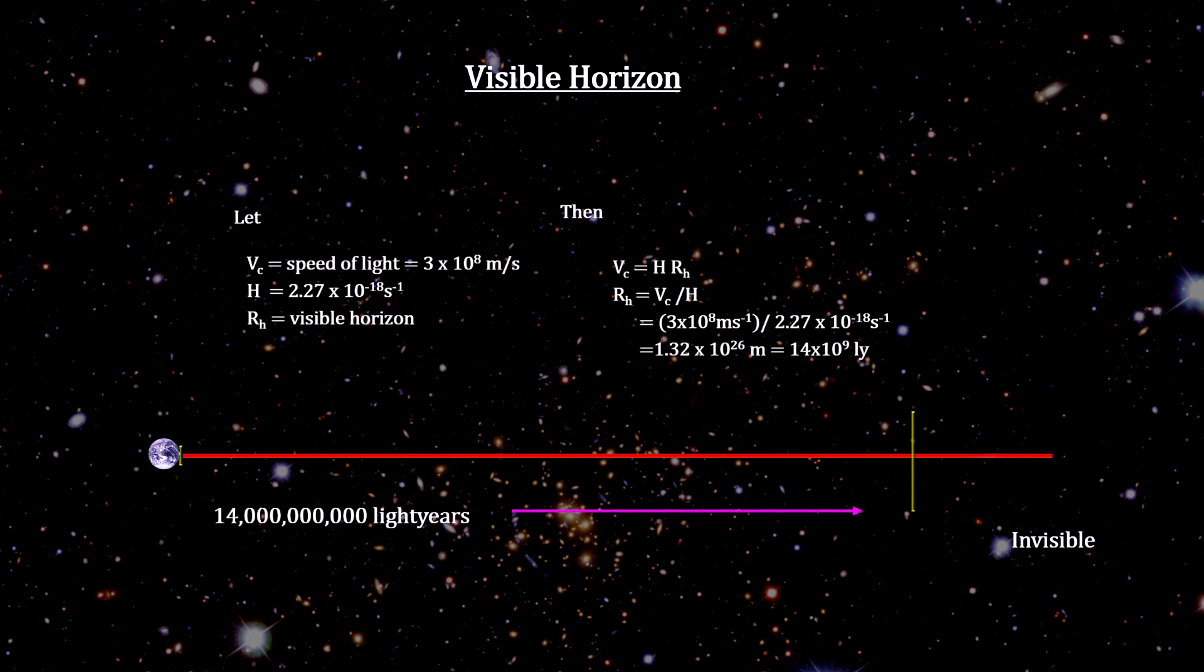Plugging in the numbers, we find that all galaxies beyond 14 billion light years could never be seen here. GNZ 11 is now 32 billion light years away, so the light that is leaving GNZ 11 now will never reach us.